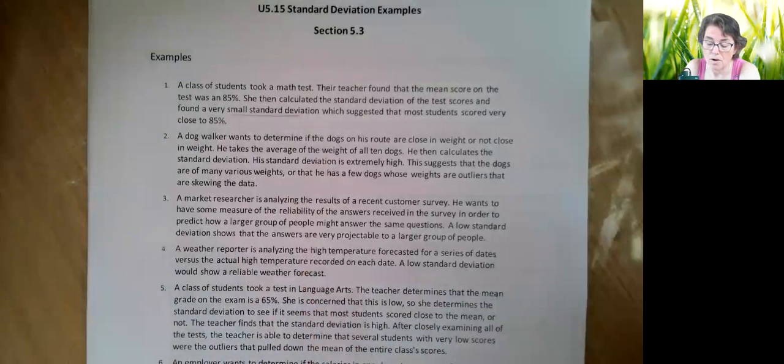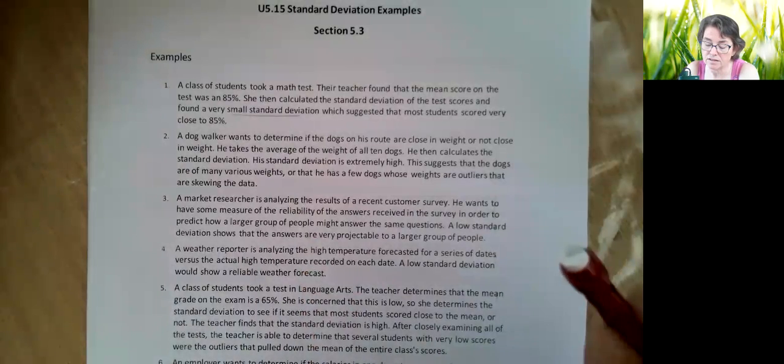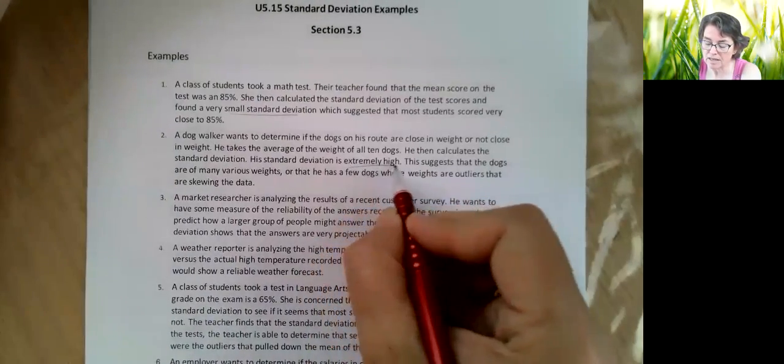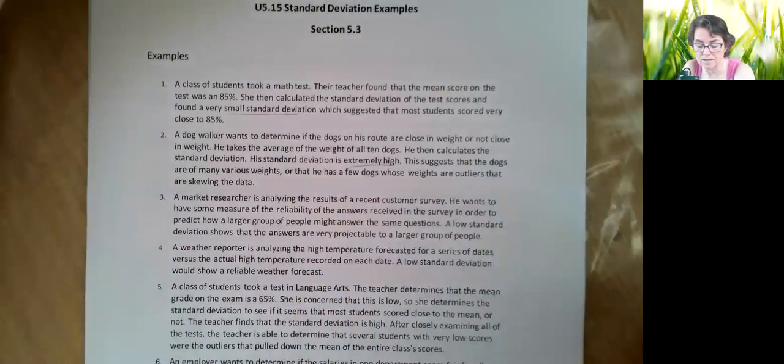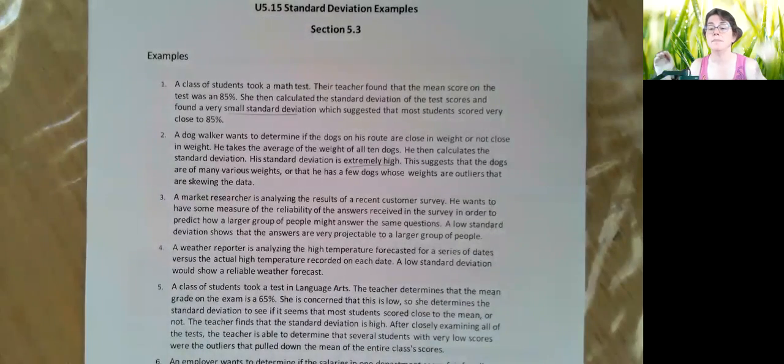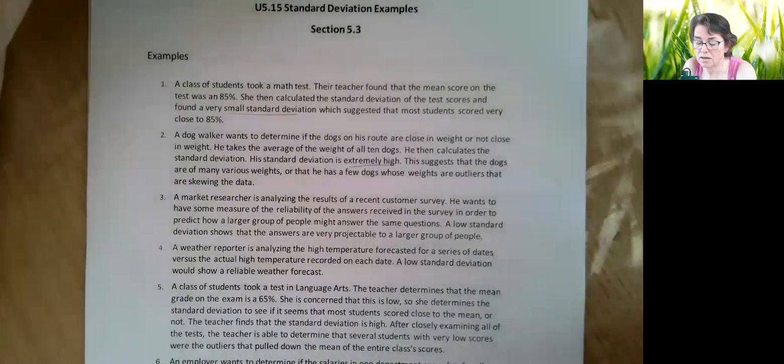Alright, a dog walker wants to determine if dogs on his route are close in weight or not close in weight. He takes the average weight of all those ten dogs and then he calculates a standard deviation. His standard deviation is extremely high. This suggests one or two things: that the dogs are of many various weights, right? The data is spread out. A big standard deviation means the data is spread out, or he's got some few dogs whose weights are outliers that are skewing the data.